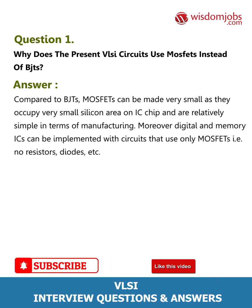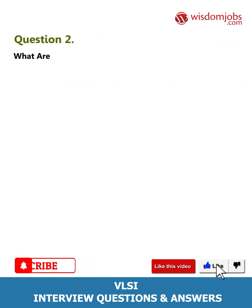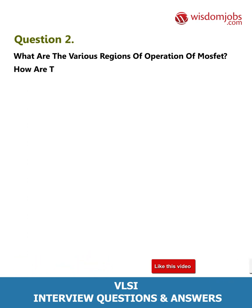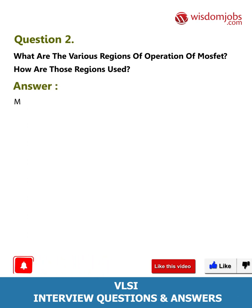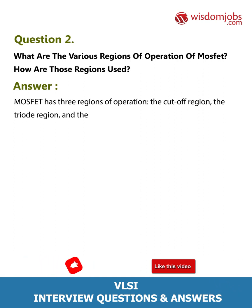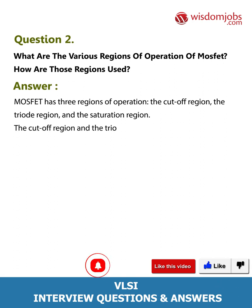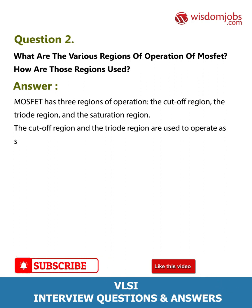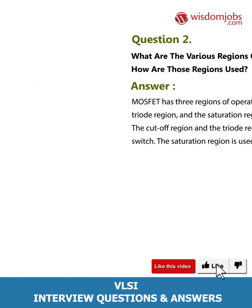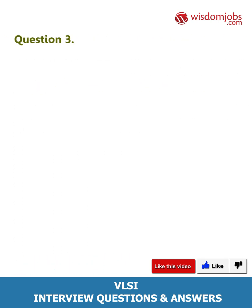Question 2: What are the various regions of operation of a MOSFET and how are those regions used? Answer: MOSFET has three regions of operation — the cutoff region, the triode region, and the saturation region. The cutoff region and the triode region are used to operate as a switch. The saturation region is used to operate as an amplifier.